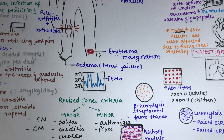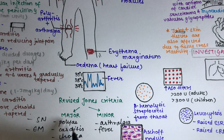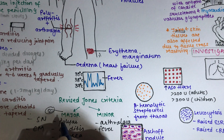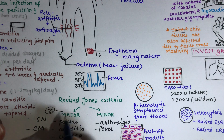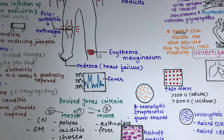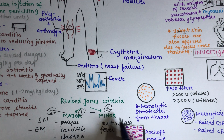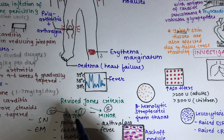Along with major and minor criteria, there must also be a positive throat culture for streptococci or elevated or rising streptococcal antibody titers. Diagnosis of ARF requires the presence of two major criteria, or one major and at least two minor criteria. Note that arthralgia — pain in the joint — is a minor criteria, not major.